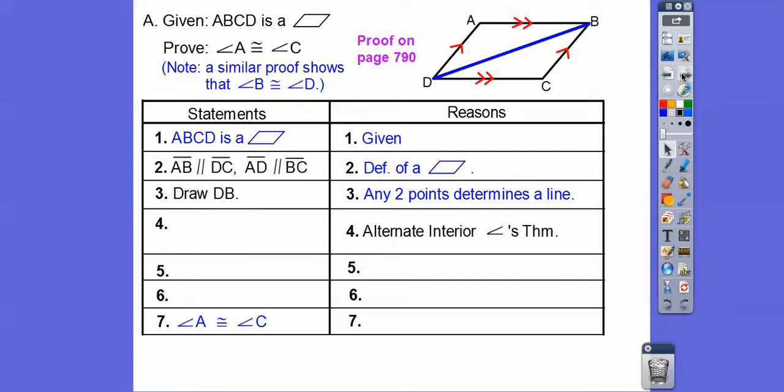So alternate interior angles are congruent right there. So angle ADB is congruent to angle CBD, so here's my one arc and one arc, and then the other ones I'm labeling with two arcs right there. Now we've got to mark it. Don't assume it, so let's mark this.